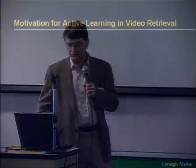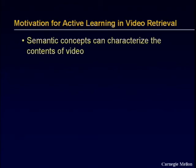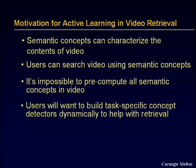But I'll move on to the active learning part. Because if you have 1,000 words that can characterize the contents of a video and users can search meaningfully, you'll still be missing things. It's impossible to precompute all possible things a user might want. For example, if someone wants to see Britney Spears' left big toe — we won't have a classifier that does that. We probably won't even have a toe classifier. But the idea is that if you're interested enough, maybe we can get the user to assist the system in building a task-specific concept detector dynamically to help with retrieval.